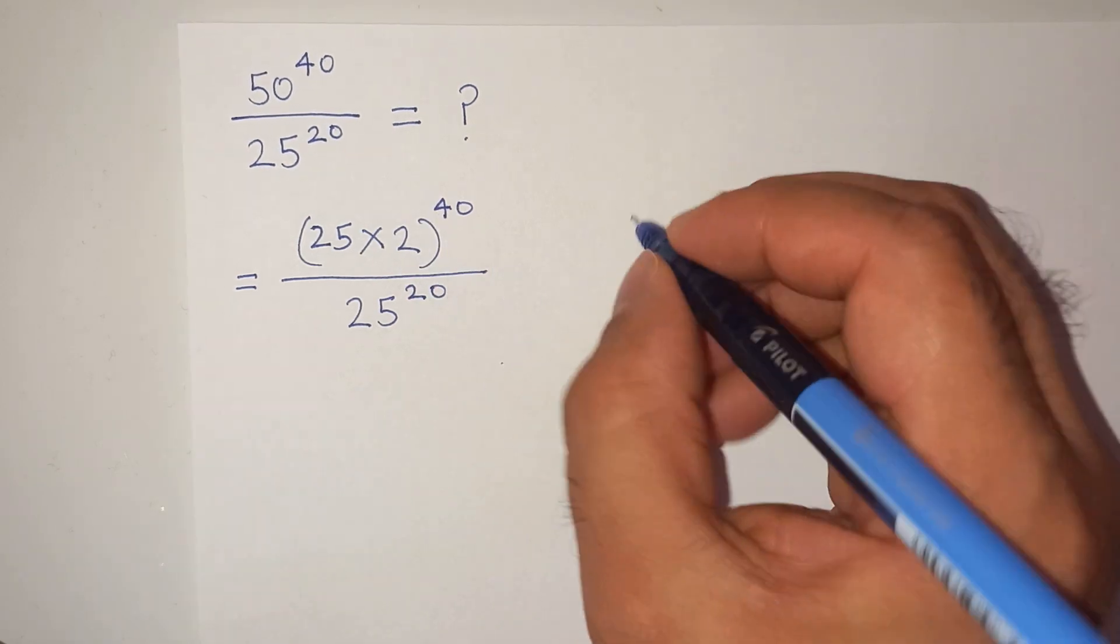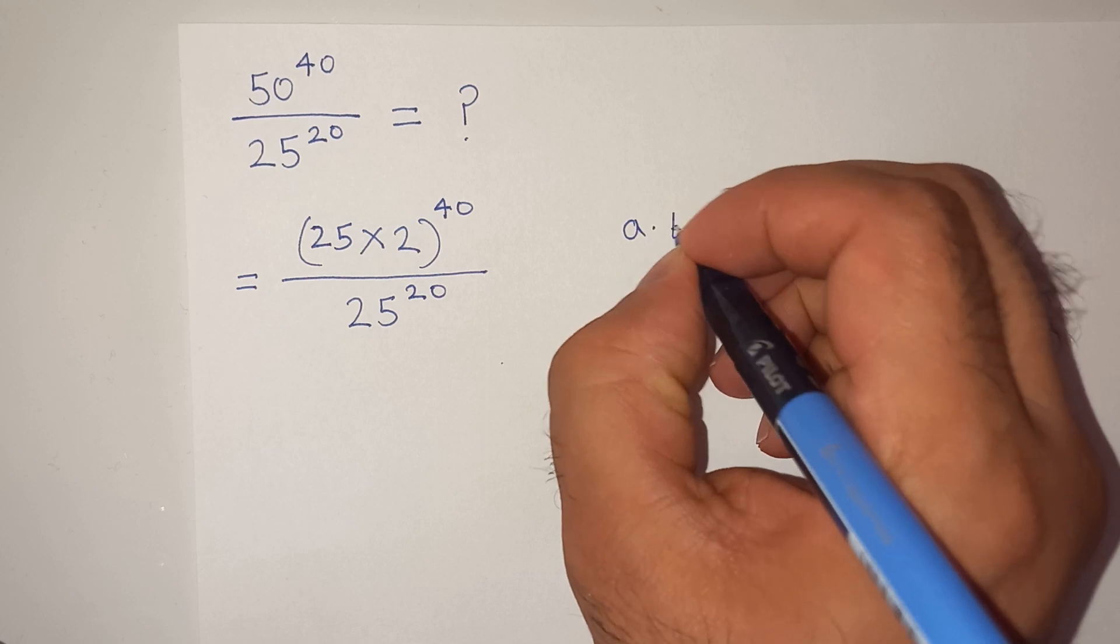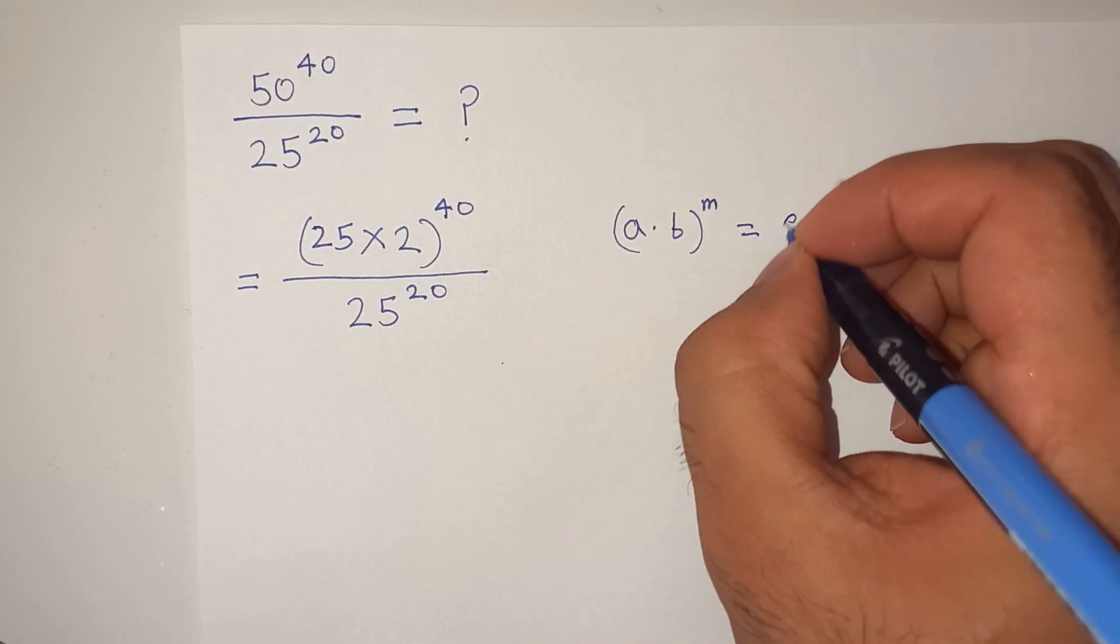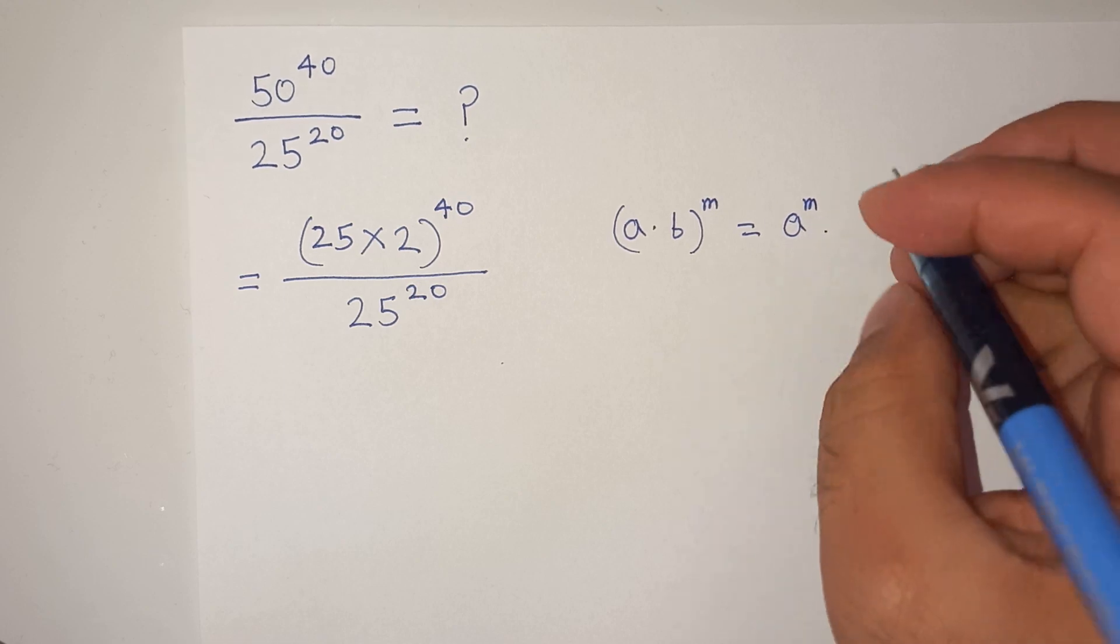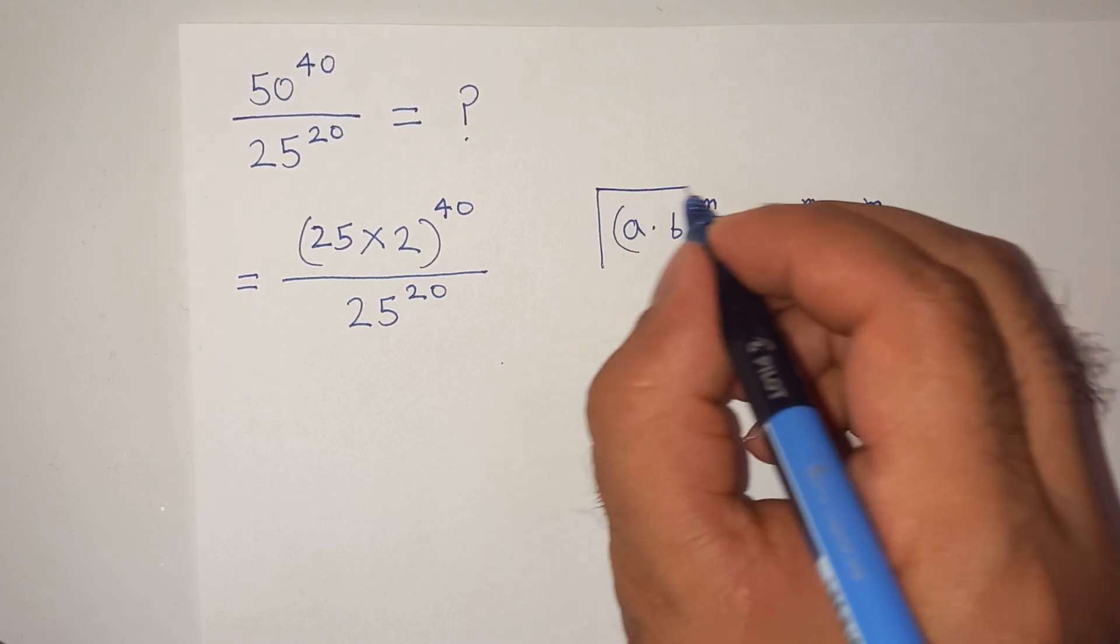Now we will apply this exponential rule which is A multiplied by B in bracket power M equals A power M multiplied by B power M. Basically we can open the bracket.